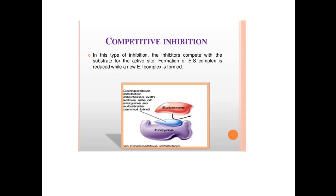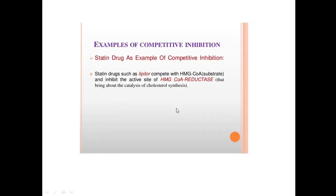Competitive inhibition: in this type of inhibition, the inhibitor competes with the substrate for the active site. Formation of the enzyme-substrate complex is reduced while a new enzyme-inhibitor complex is formed. The competitive inhibitor interferes with the active site of the enzyme so the substrate cannot bind.